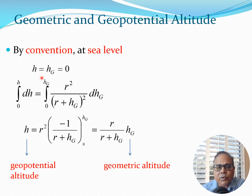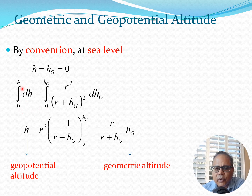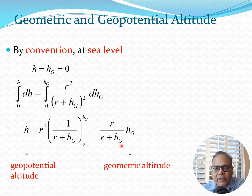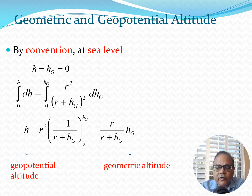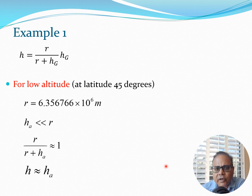To use this equation we integrate it. By convention, at sea level both h and hg are zero, so we integrate both from zero: h goes from 0 to h and hg goes from 0 to hg. Performing this straightforward integration gives the result: h = (r / (r + hg)) · hg, where h is the geopotential altitude and hg is the geometric altitude. This equation lets you calculate either value given the other, provided you know the radius of the Earth.